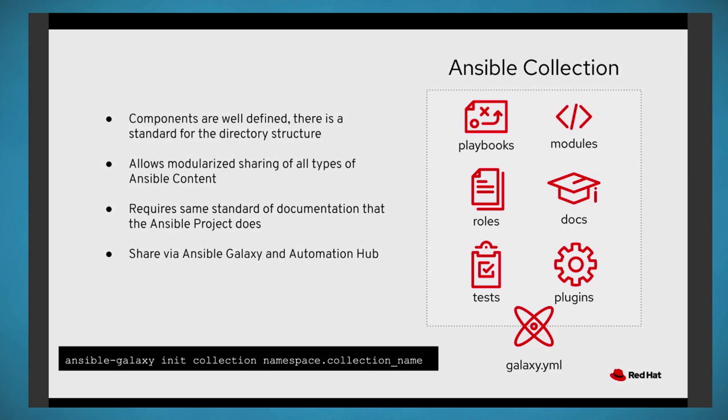The community version will be 2.10 because we want to maintain compatibility with 2.9 as much as possible. The 2.9 release should be considered a bridge release — you install 2.9 and you have all the content, but you can also install content from Galaxy, Automation Hub, or offline tarballs that have collections built. We wanted to have a release where you could actually be in the old world and the new world simultaneously and then move forward.